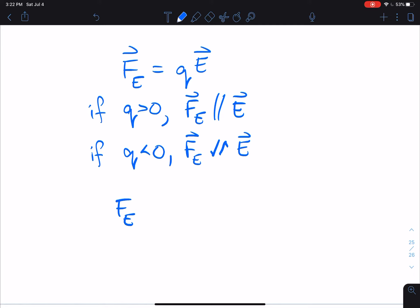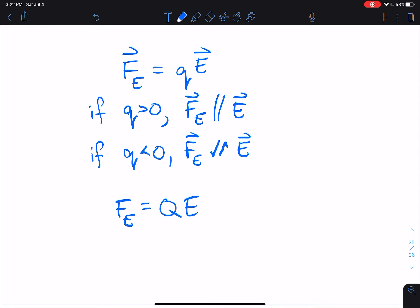Then I just have Fe, no vector symbol. And that has to equal, and now I use a capital Q, because I'm talking about the charge magnitude. And of course, just the E field, as such without a vector symbol.